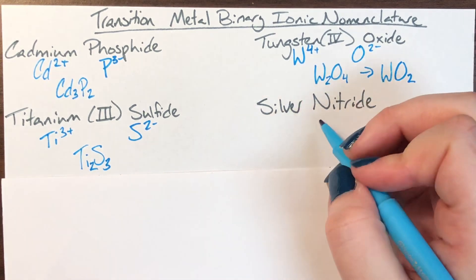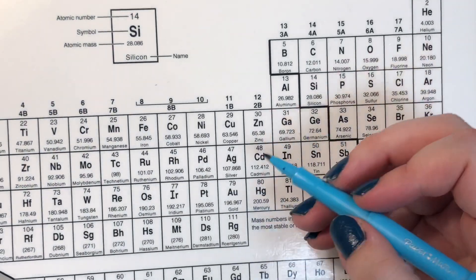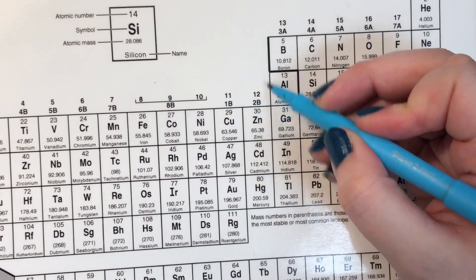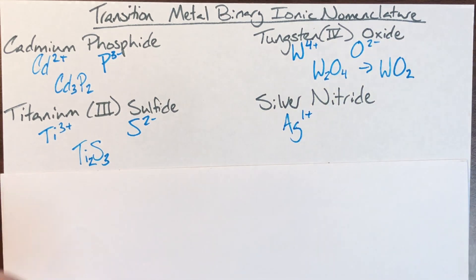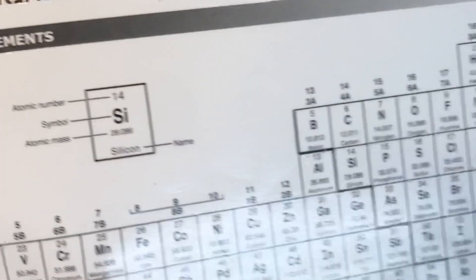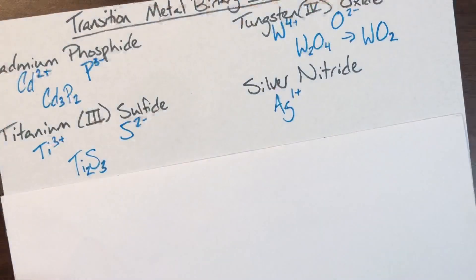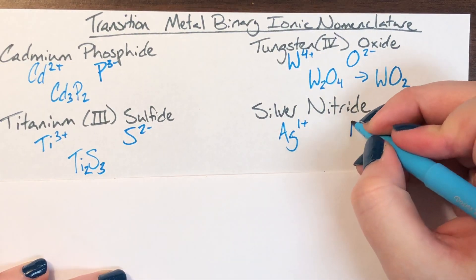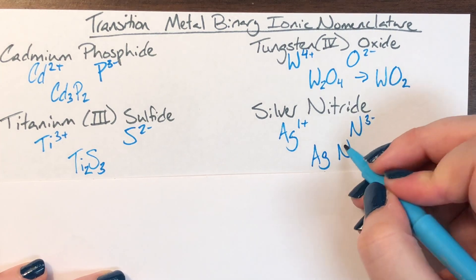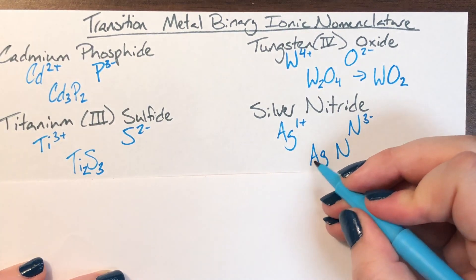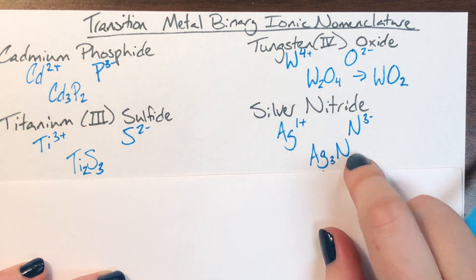Silver nitride. I've run into one that's not going to give me my charge. I need to find silver on my periodic table. Silver is Ag. In the Katzenegel stair-step, it is the first stair, which means silver, Ag, has a charge of plus 1. Then I need to find nitride, which is nitrogen. Nitrogen is in column 5A, meaning it has 5 valence electrons, so it will steal 3. That makes N have a charge of negative 3. Writing them together: nitrogen's charge of negative 3 means I need 3 silvers to counteract it. I only need 1 nitrogen.